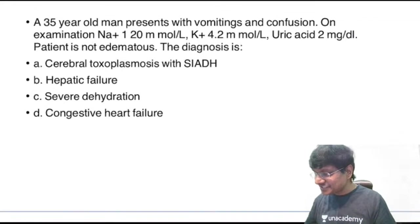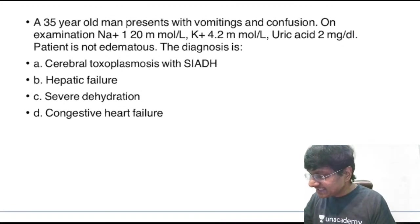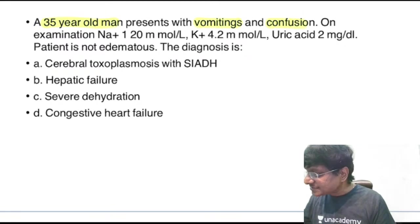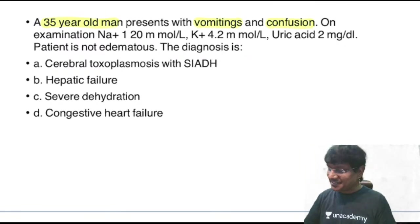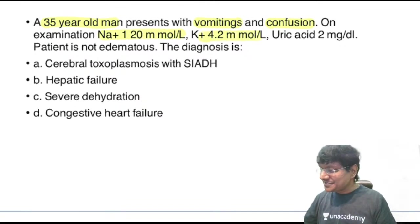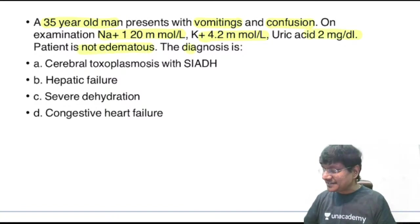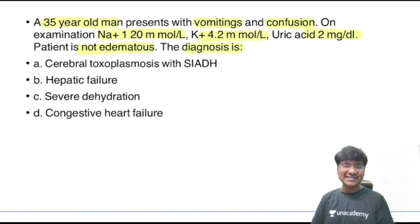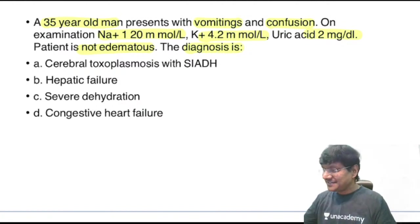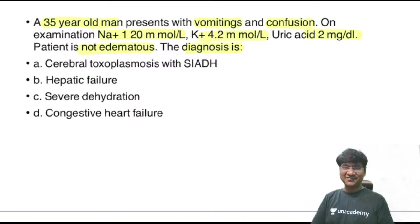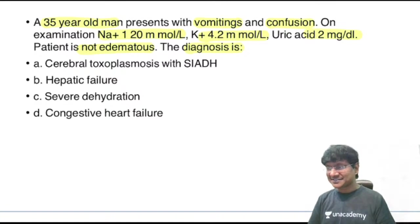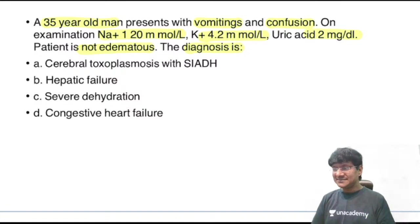Clinical question: a 35-year-old male presenting with vomiting and confusion. Serum sodium is 120 mmol/L, potassium 4.2 mmol/L, uric acid 2 mg/dL, and the patient is not edematous. What is the diagnosis?